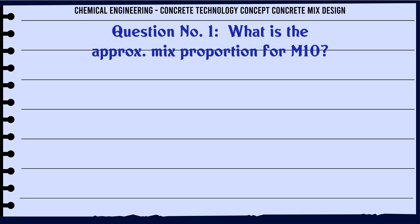What is the approximate mix proportion for M10? A: 1:3:6, B: 1:2:4, C: 1:1.5:3, D: 1:1:2. The correct answer is 1:3:6.